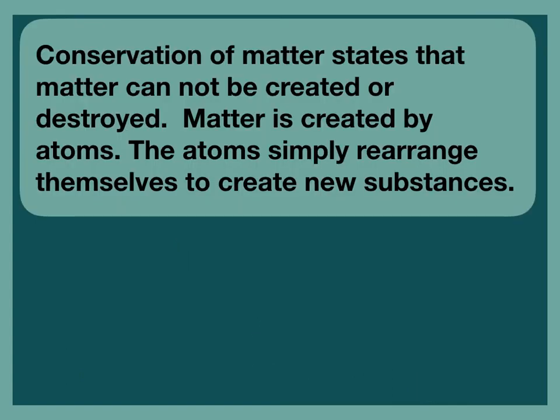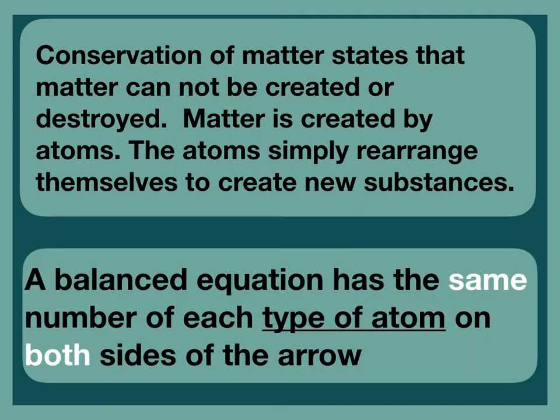As a reminder, conservation of matter states that matter cannot be created or destroyed. Matter is made up of atoms and the atoms simply rearrange themselves to create new substances. We see this in balanced equations. For an equation to be balanced, it has to have the same number of each type of atom on both sides of the arrow.